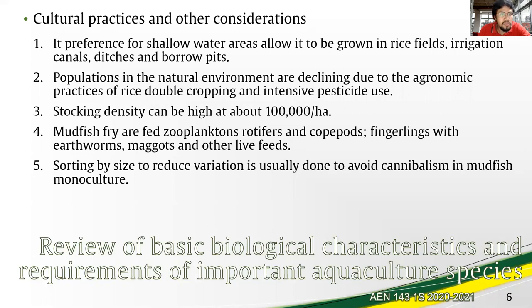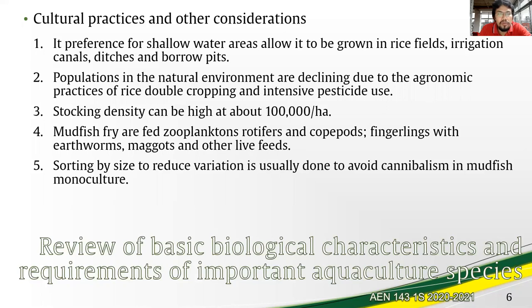The mudfish's preference for shallow water allows for growing the species in rice fields, irrigation canals, ditches, and borrow pits. With intensive rice culture, wild populations are also being affected. In culture, the mudfish stocking density can be about 100,000 per hectare, which is relatively high compared to other species — supported by its ability to breathe atmospheric air. The fry and fingerlings are also carnivorous and should be fed zooplankton, rotifers, cooked pods, and earthworms.